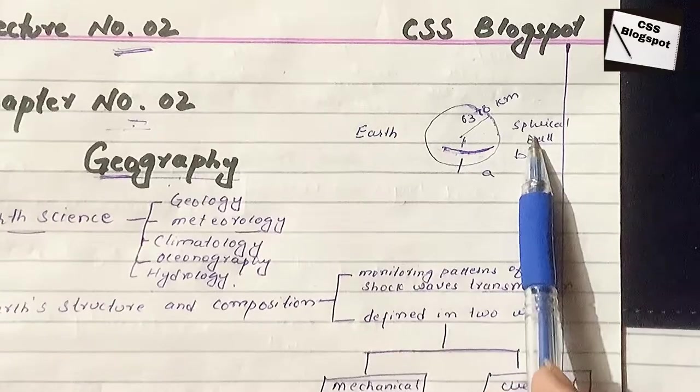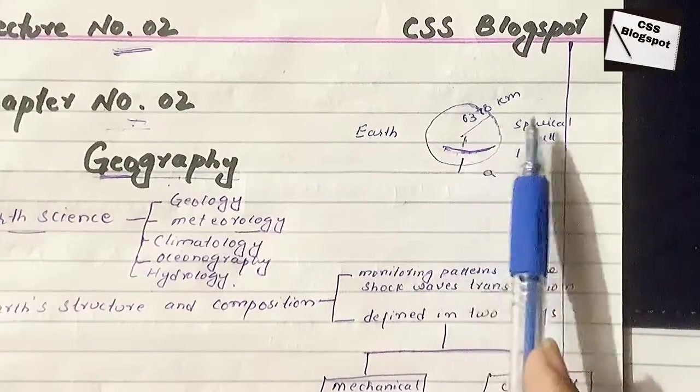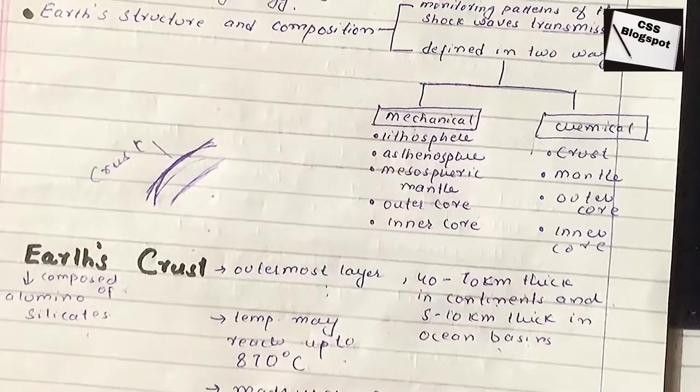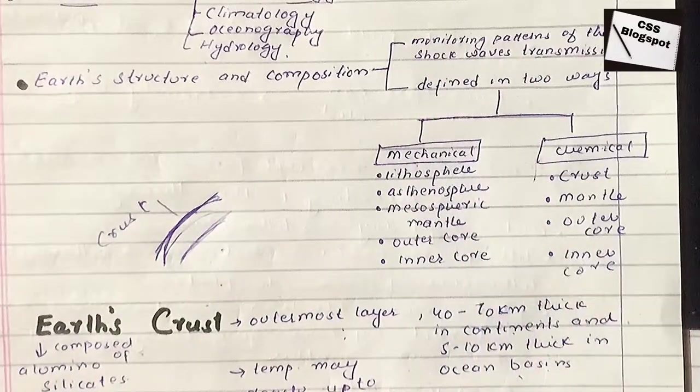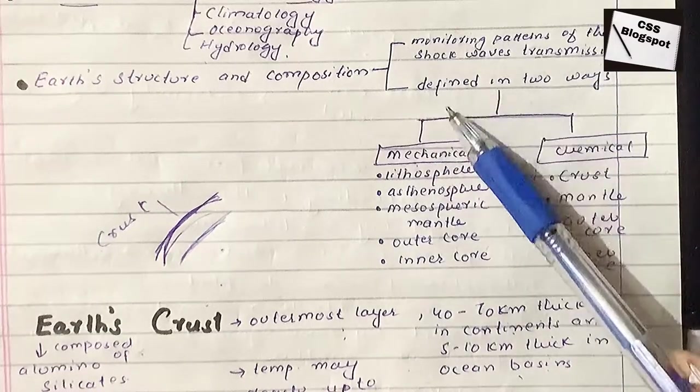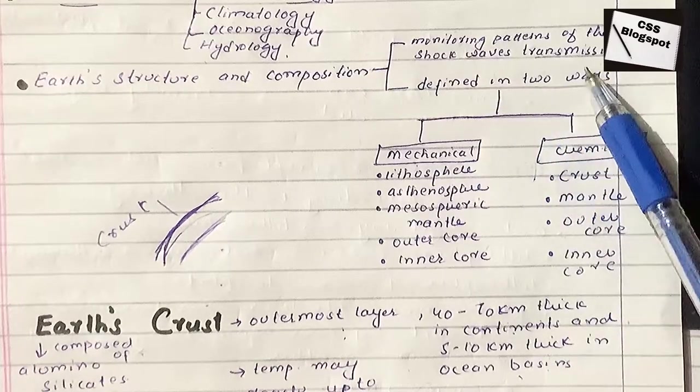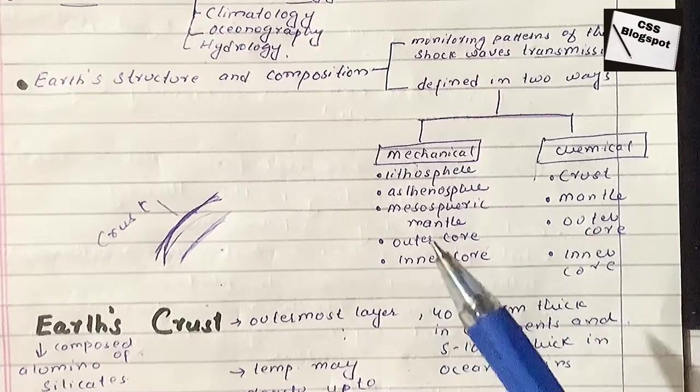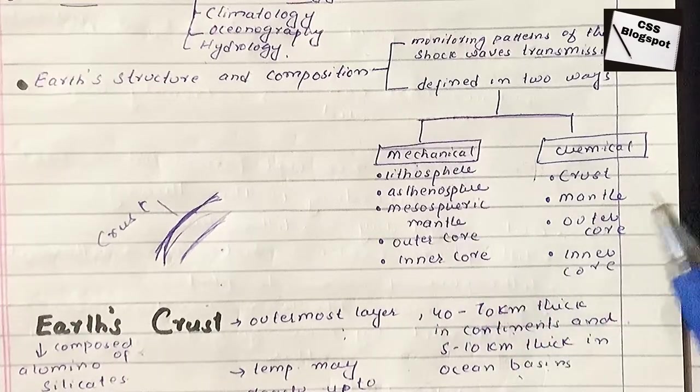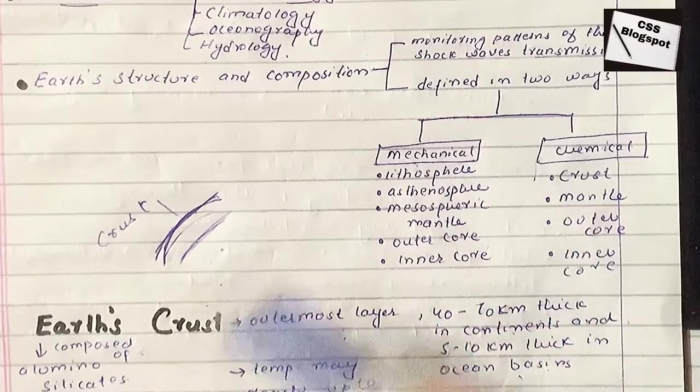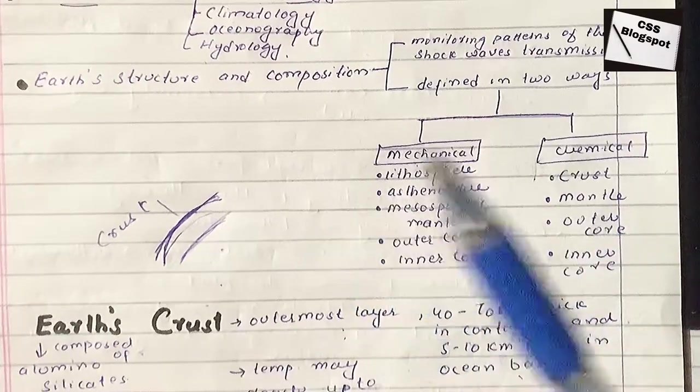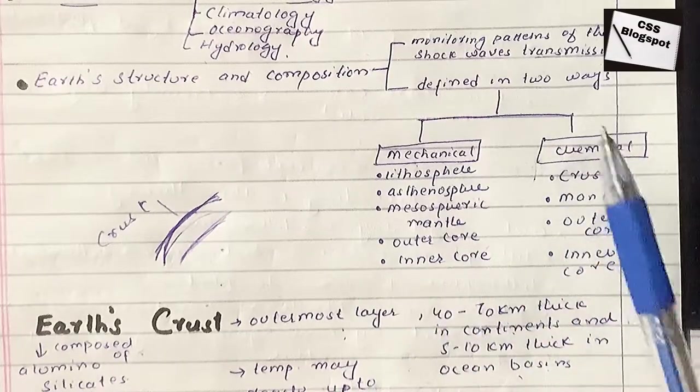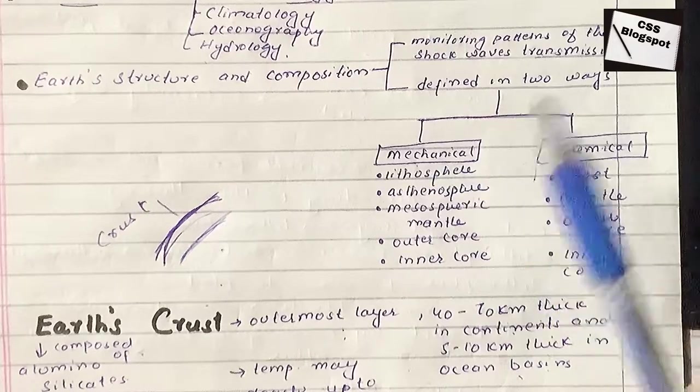Earth is a spherical ball. It is 6,378 kilometers—that is the distance from the center of the earth. If we talk about earth's structure and composition, scientists have studied through observations and experiments. They have monitored patterns of shock waves or seismic waves which are produced as a result of earthquakes or human-made blasts. These waves are transmitted and passed through different parts where their properties change.